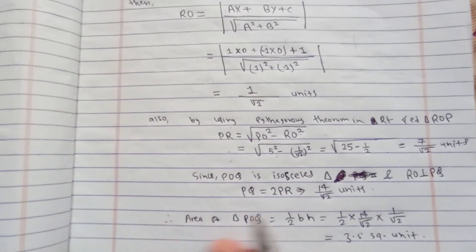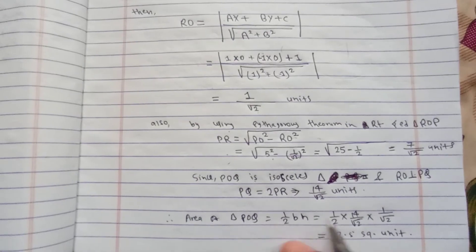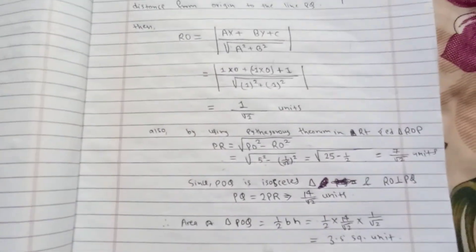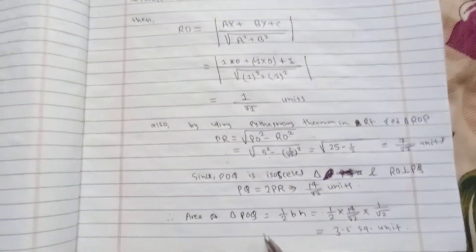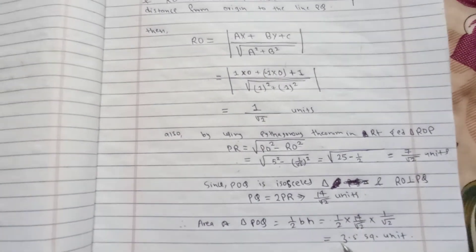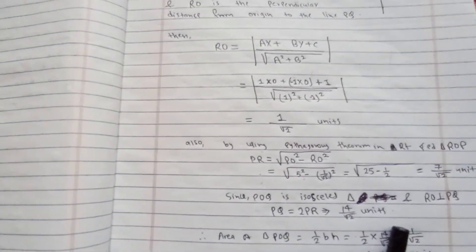The area of triangle POQ equals 1 by 2 times base times height. Base is PQ, which we just calculated, and height is the perpendicular height RO. Putting the values and calculating, we get 3.5 square units.